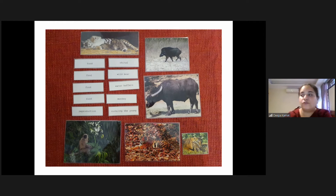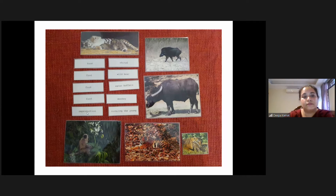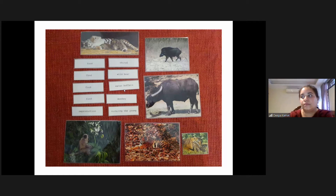The title cards are labeled 'food' and 'reproduction.' The name cards are: wild boar, water buffalo, monkey — these are all name cards. Những cái thẻ của con hổ ghi là thức ăn và sinh sản. Về bên cạnh đó là những thẻ tên — ví dụ như con trâu nước, con khỉ, con lợn rừng.